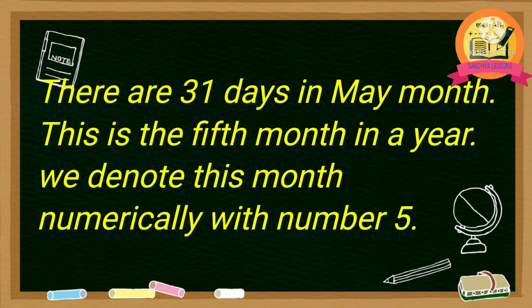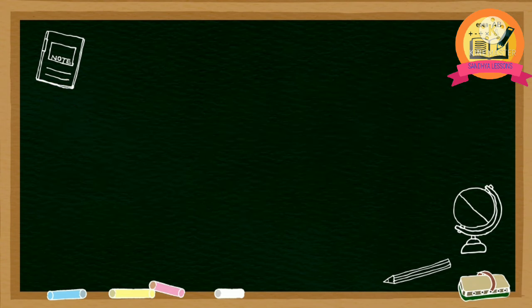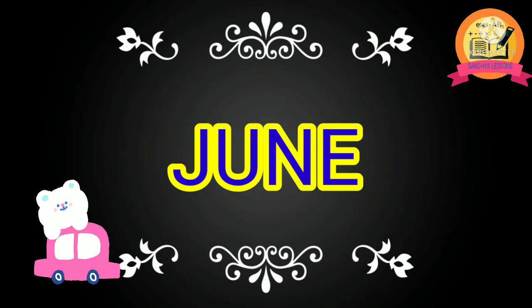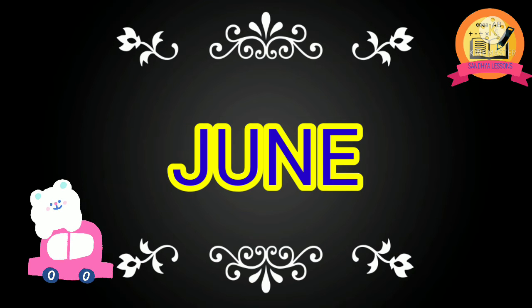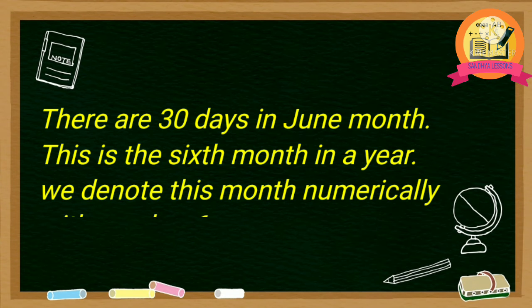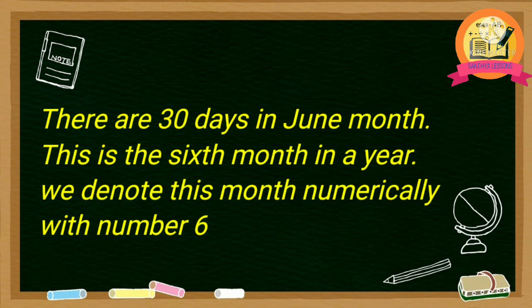June — J-U-N-E. There are 30 days in June month. This is the sixth month in a year. We denote this month numerically with number 6.